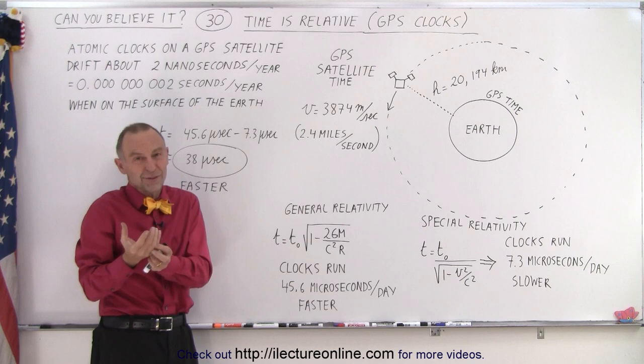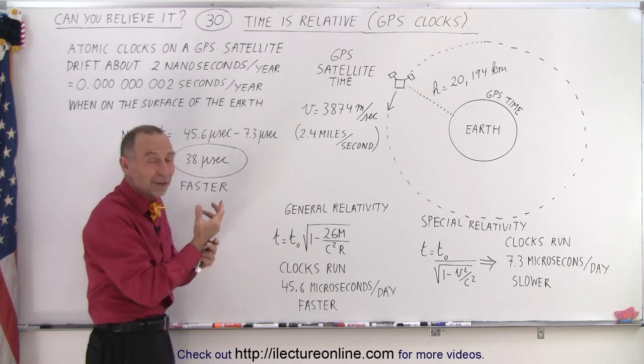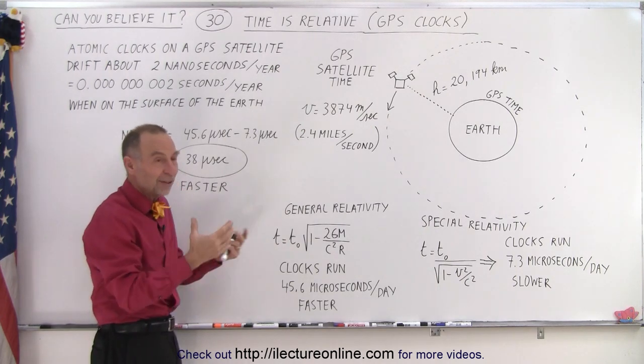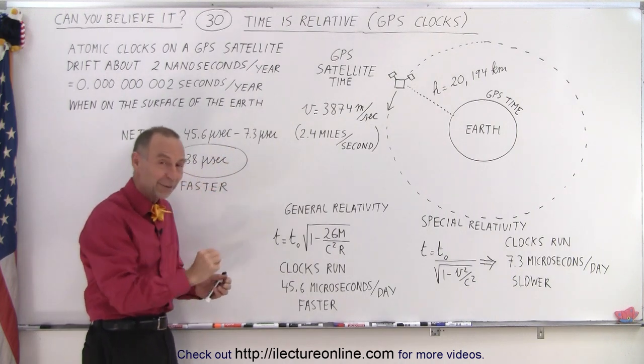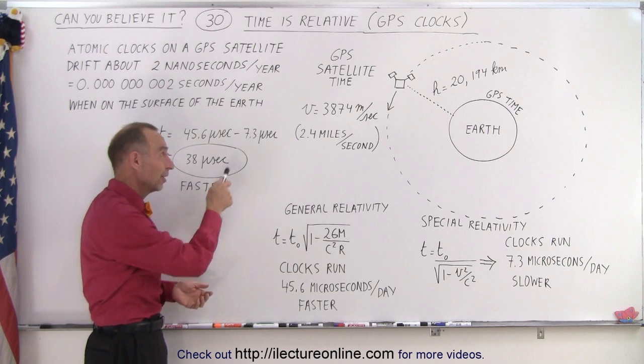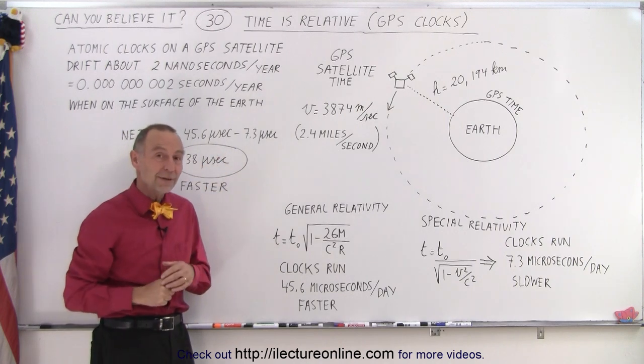And of course, you wouldn't want to use a GPS receiver if it was going to tell you that you're about 20 miles away from where you actually are. You want to know exactly where you are, and therefore we have to adjust for those time differences.